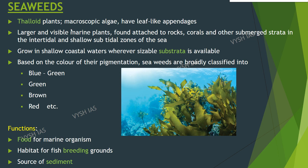Seaweeds: They are thaloid plants, meaning they have no differentiation of tissues like roots, stems and leaves. Microscopic algae, they have leaf-like appendages and are larger visible marine plants. Found attached to rocks, corals and other submerged strata in the intertidal and shallow subtidal zones. Based on the color of their pigmentation, seaweeds are broadly classified into blue-green, green, brown and red seaweeds. They act as food for marine organisms, provide habitat for fish, and serve as breeding grounds.